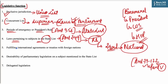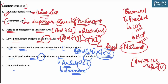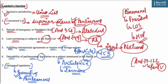Parliament is also empowered to legislate on State List items to fulfill international agreements or treaties with foreign nations, as per Article 253. Under Article 252, if legislatures of two or more states pass a resolution indicating the desirability of parliamentary legislation on a State List subject, Parliament can enact laws for those states. Parliament can also confer on the executive the authority to establish specific rules and regulations within overarching legislation — known as delegated or subordinate legislation — and such regulations are presented to Parliament for scrutiny.